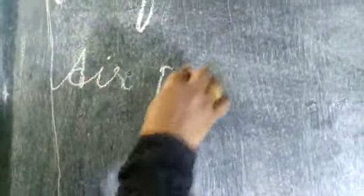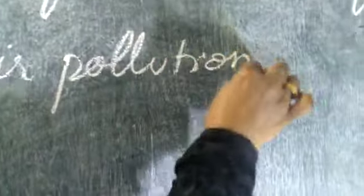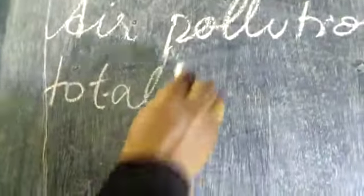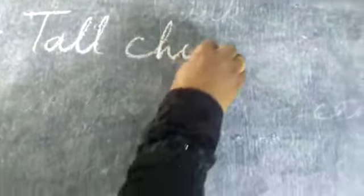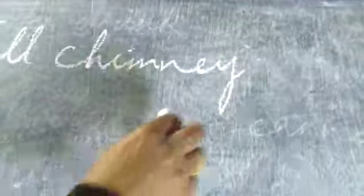Good morning children. Today we continue with the lesson. Air pollution cannot be totally eliminated, but what can be done is it can be reduced. Today we will study the steps on how air pollution can be reduced.